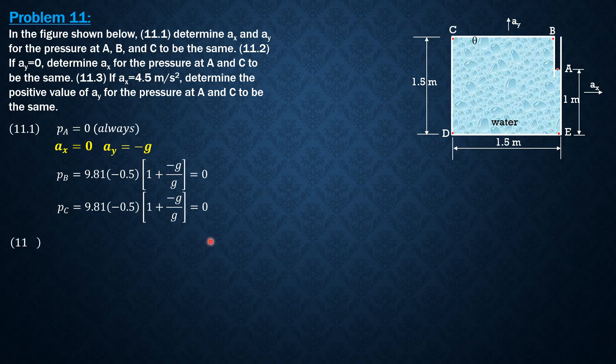For the second question, for the pressure at A and C to be the same, because the pressure at A is always 0 because it is exposed to the atmosphere, the imaginary surface should cross C also so that the pressure at C will be 0.